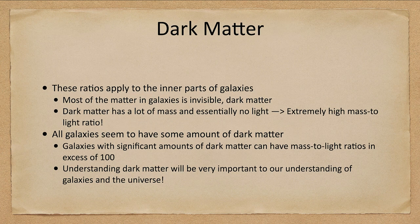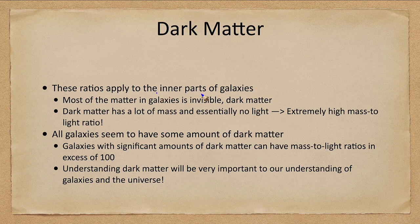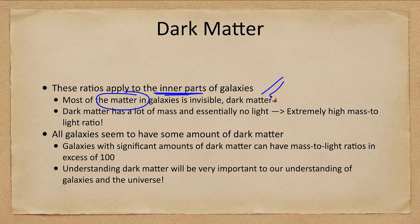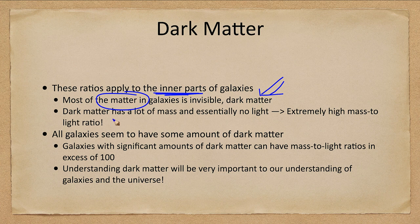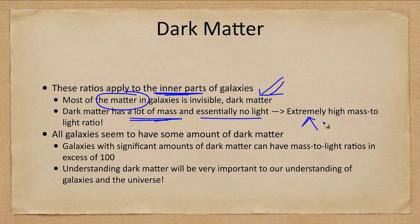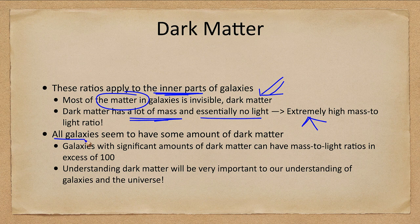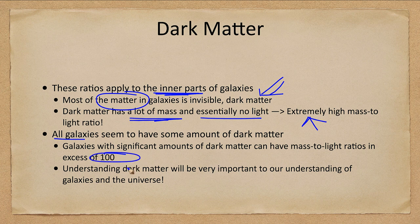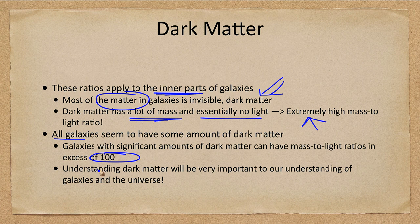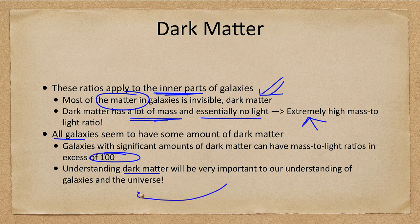Now, how about dark matter? Well, these ratios are applied to what we see in the inner parts of the galaxy, but most of that matter is invisible dark matter and stuff that we cannot see. It has a lot of mass and no light, meaning it is an extremely high mass to light ratio. All galaxies have some amount of dark matter, so we see some of these galaxies can have mass to light ratios in excess of 100. They have a lot more mass as compared to the amount of light that they give off. Understanding this dark matter is going to be very important for understanding galaxies and the universe.